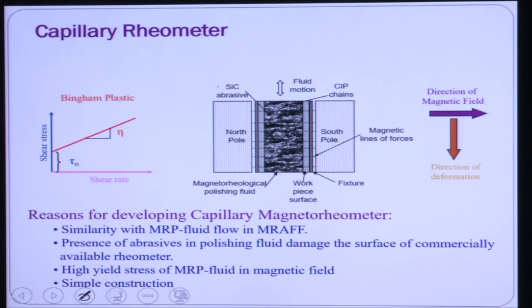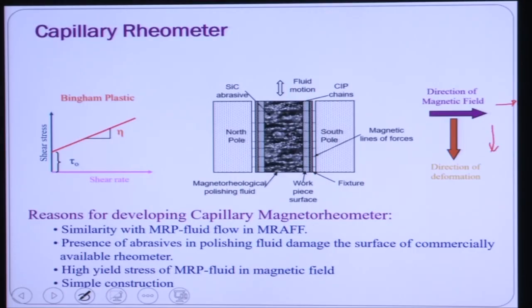Different rheometers were tried; initially we tried a capillary rheometer. The advantage is that it is cheap and easy to make and use. It also has similarity with our MRF finishing process — in the MRF process, the magnetic field is applied horizontally while the fluid flows in the vertical direction.